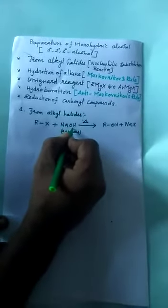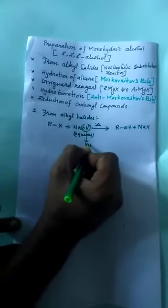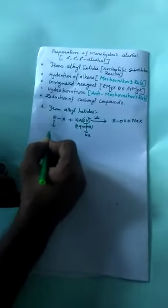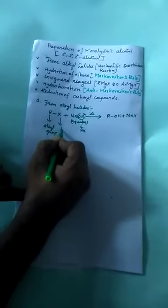So in this reaction the OH minus is the nucleophile. R is alkyl group. X is halogen, maybe fluorine, chlorine, bromine. Halogen is the leaving group. Halogen is replaced by OH, so we get alcohols. Sodium halide is a byproduct.